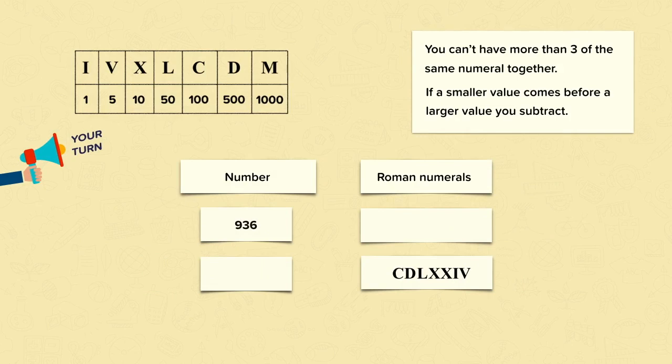Now it's your turn. See if you can write 936 in Roman numerals and write the Roman numeral C, D, L, X, X, I, V as a number. Pause the video and have a go.